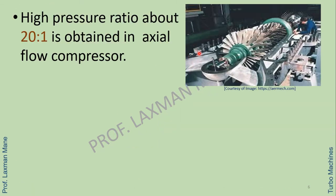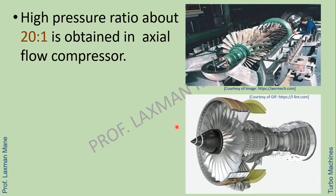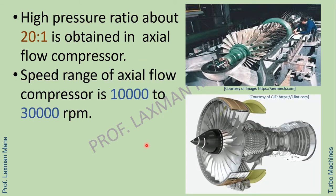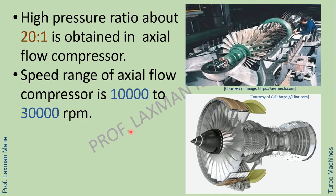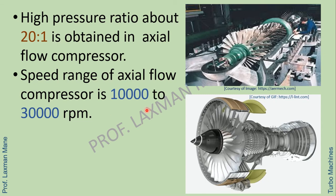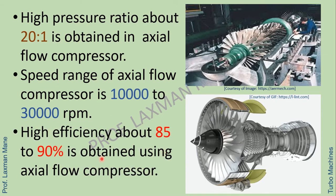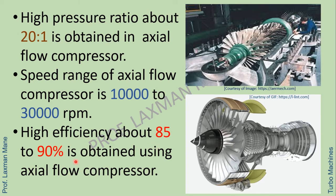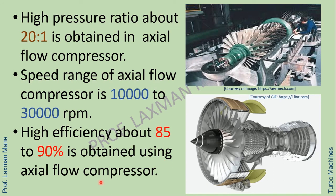In case of axial flow compressor, a high pressure ratio of about 20 to 1 is obtained. Axial flow compressors give a speed range of 10,000 to 30,000 RPM. High efficiency of about 85% to 90% is obtained using axial flow compressor.